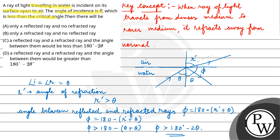So our correct option is option D. This is our final answer. A reflected ray and refracted ray and angle between them would be greater than 180 degree minus 2 theta. I hope you understood it well. Best of luck.